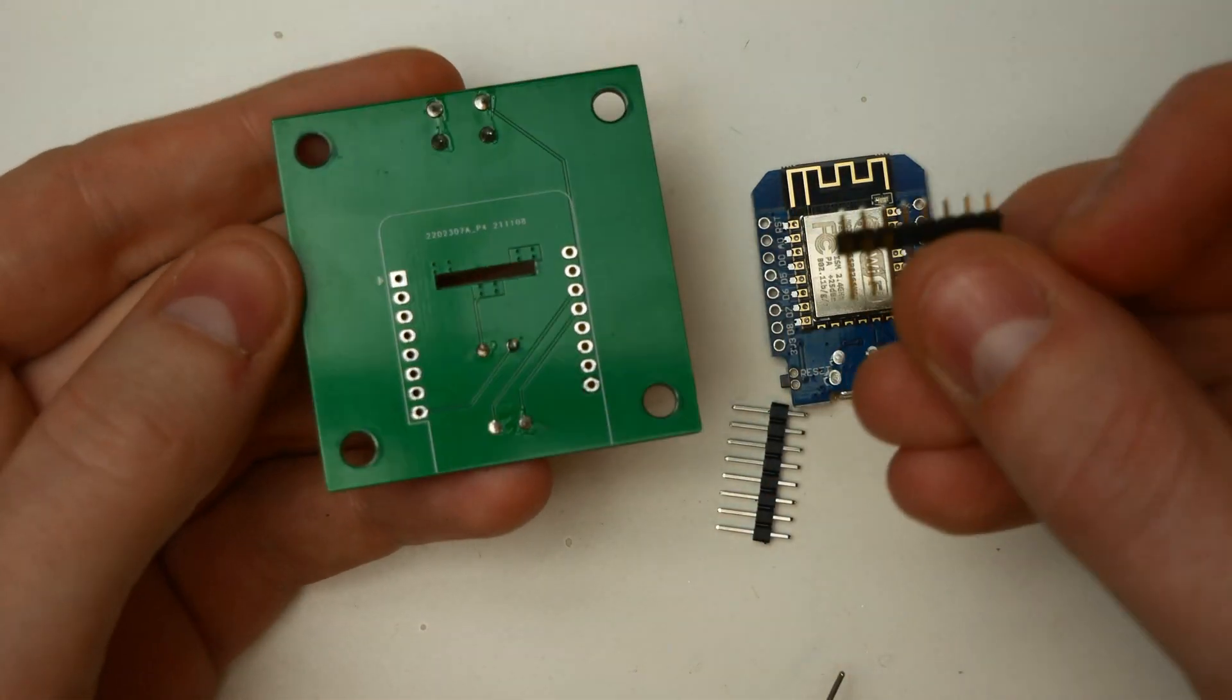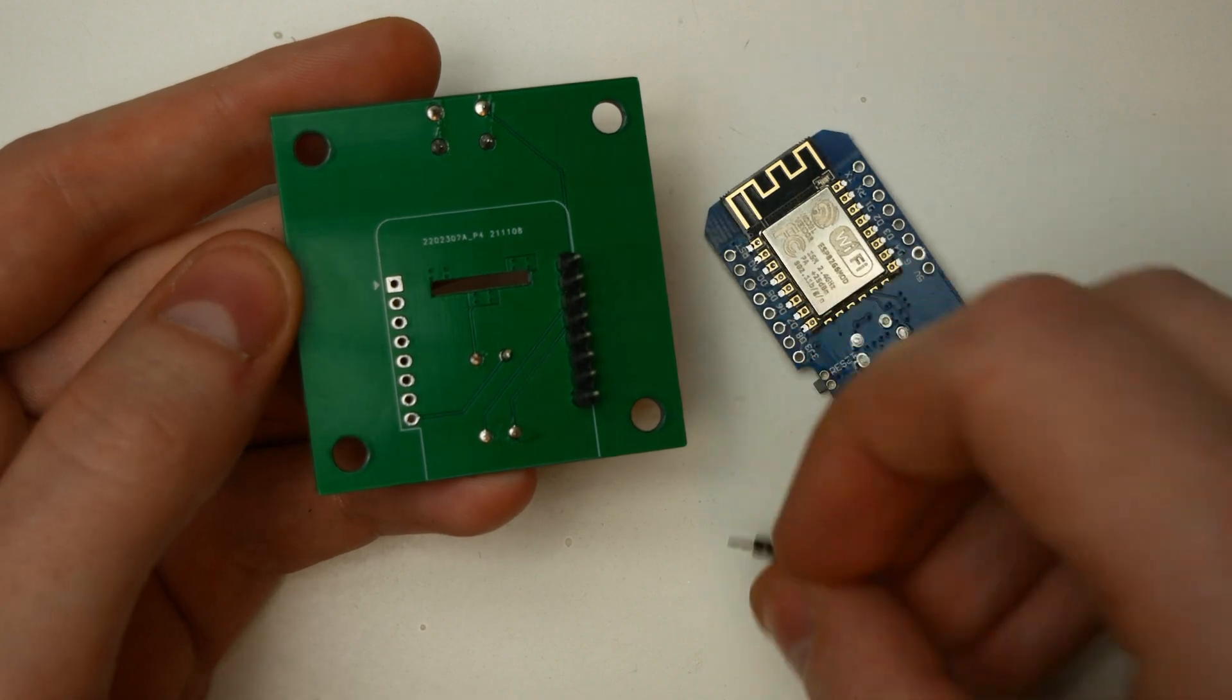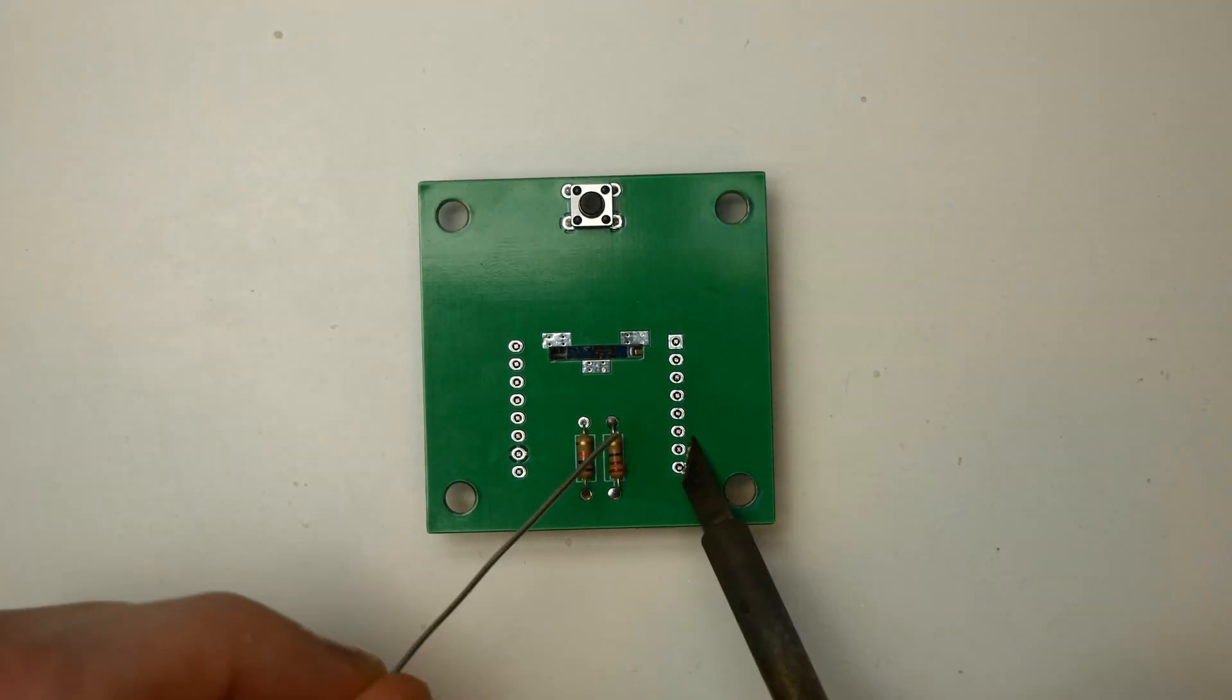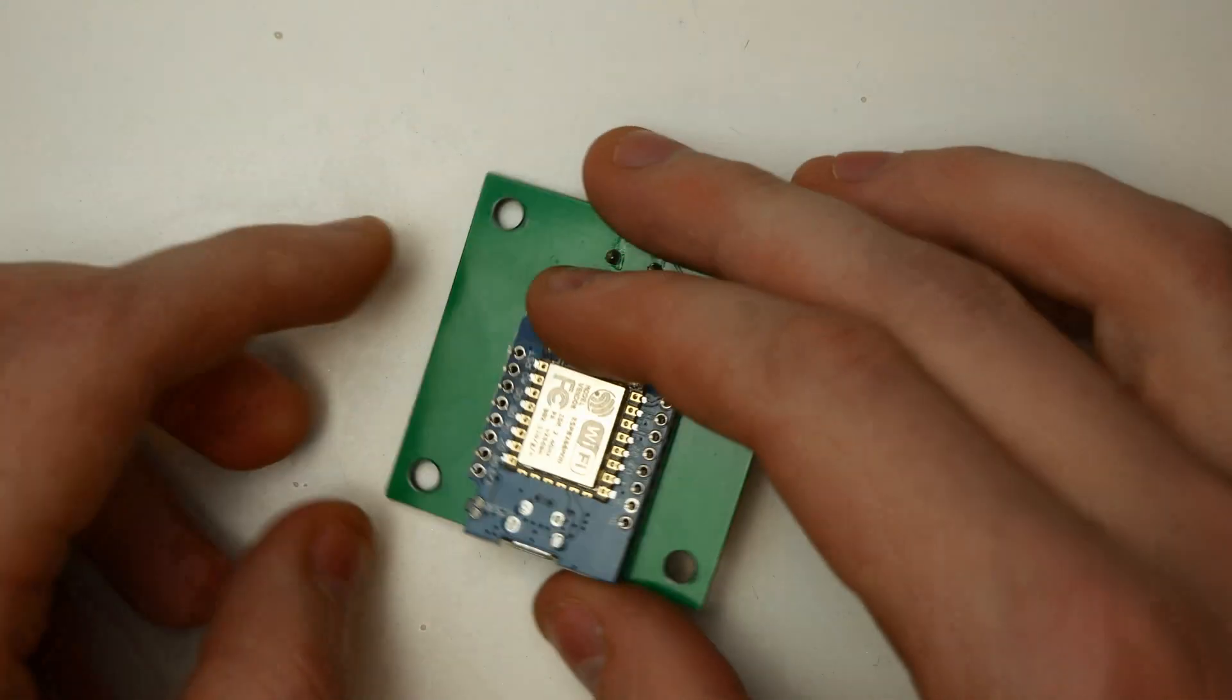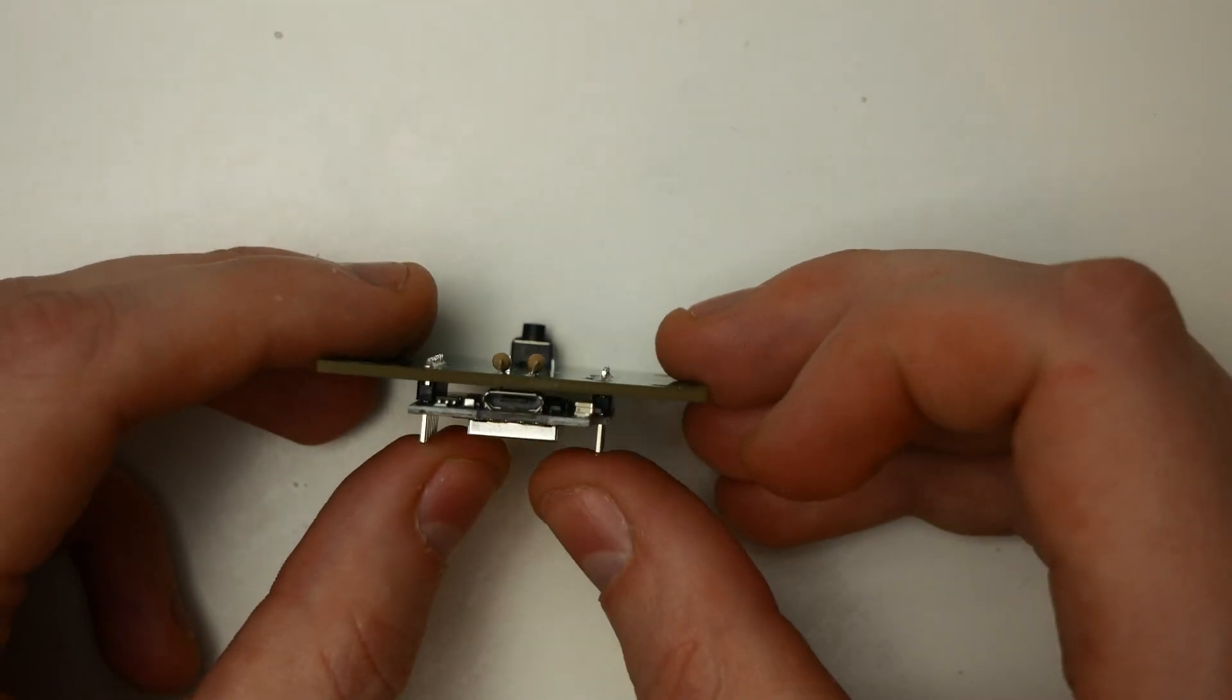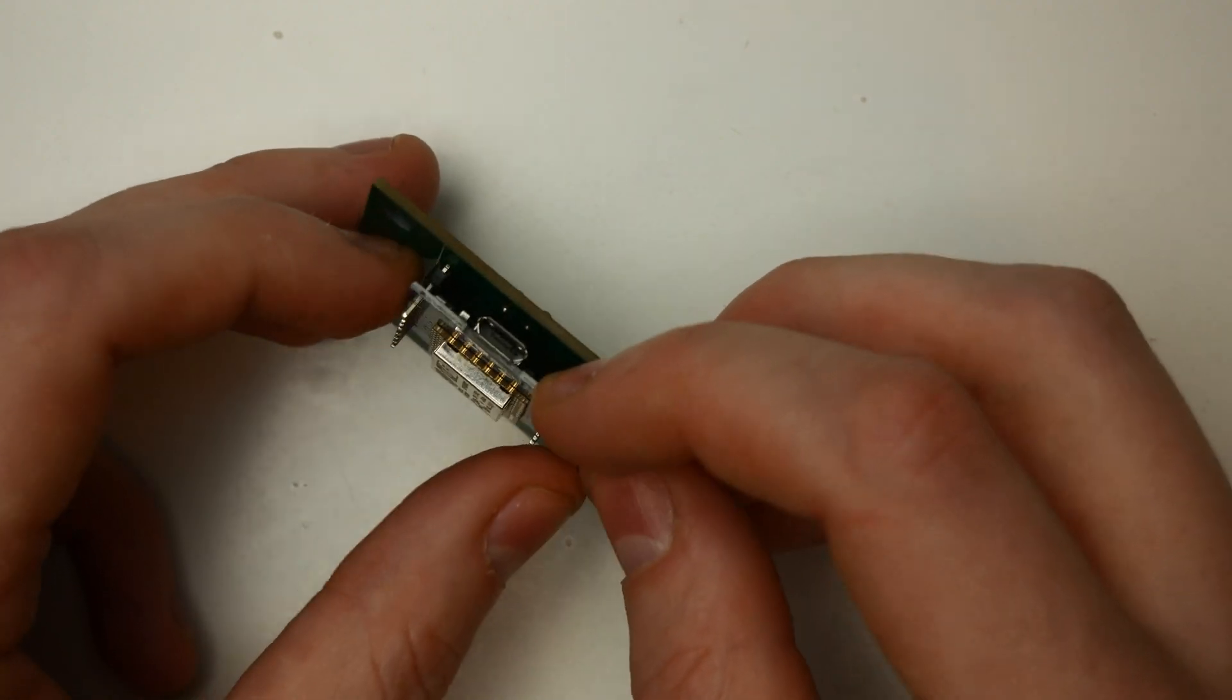After that it's the turn of the ESP8266 whose pin headers are inserted with the short side on the bottom side of the board. To make sure that the ESP will fit later it is also plugged in. The pin headers are then soldered from the top side. After that the ESP is soldered. Make sure that the micro USB connector does not touch the legs of the resistors. So make sure to lift the ESP a bit when soldering so that there is enough space.